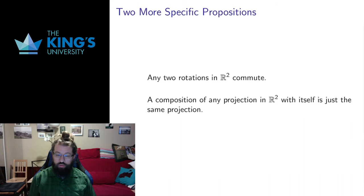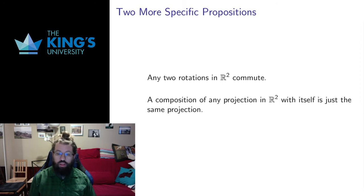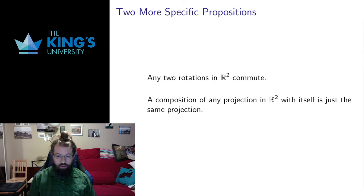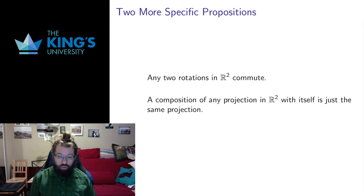So I want to prove two specific propositions about the examples we did in R2 — the five types of transformation in R2. I want to prove that any two rotations in R2 commute. We said that general matrix multiplication is not commutative, but it happens to be true that for specifically rotations in R2, we can interchange the order, and any two rotations will commute. I also want to prove that the composition of a projection with itself is just the same projection. If I flatten R2 onto some line and then flatten again onto the same line, the second projection shouldn't really do anything. Doing it once and doing it twice is the same thing.